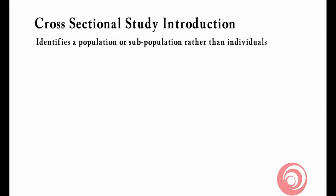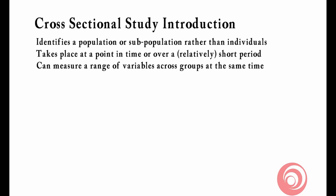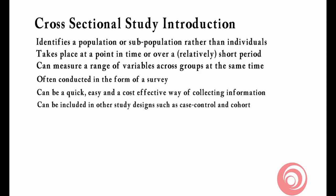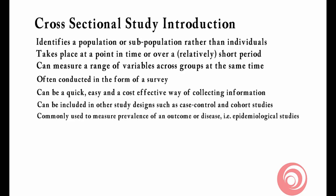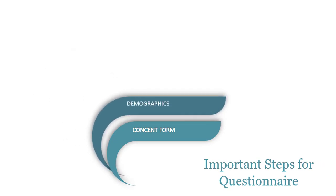Why do we conduct descriptive cross-sectional studies? It identifies populations or sub-populations rather than individuals. It takes place at a point in time, can be conducted over a short period, and can measure a range of variables across groups at the same time. Most importantly, it is often conducted in the form of a survey, making it quick, effective, and easy for the collection of information. It can also be included in case-control or cohort studies, and is commonly used to measure prevalence, outcomes, epidemiological data, as well as knowledge, perception, and opinions.